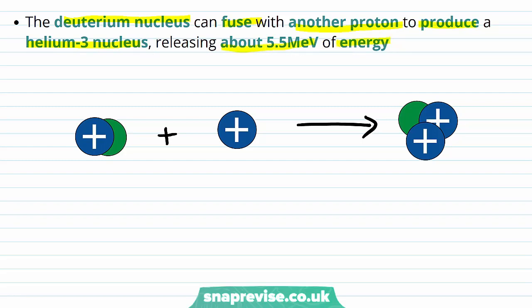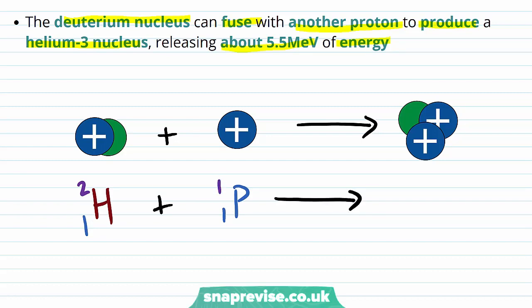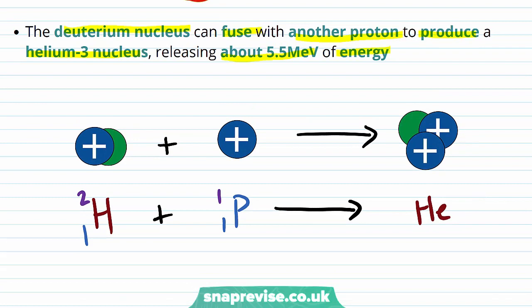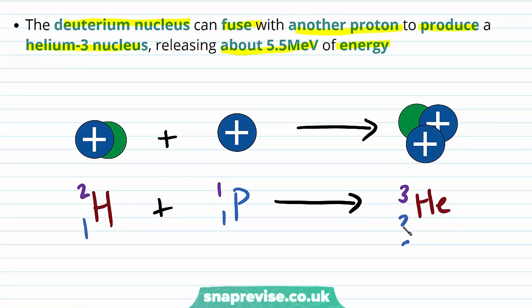We start with the deuterium nucleus with two nucleons and one proton, and add a proton to form a helium-3 nucleus. A helium-3 nucleus has three nucleons — two protons and one neutron — so its proton number is 2. In this process, 5.5 mega electron volts of energy are released.